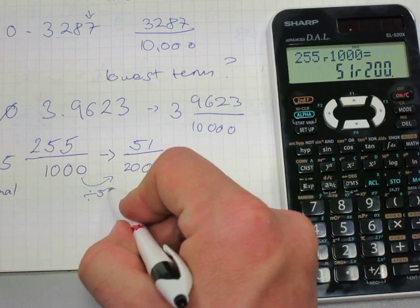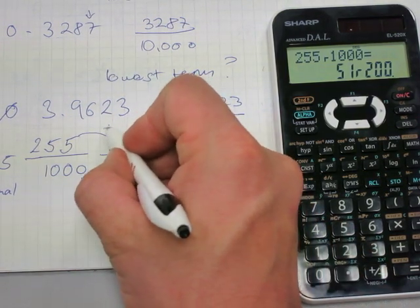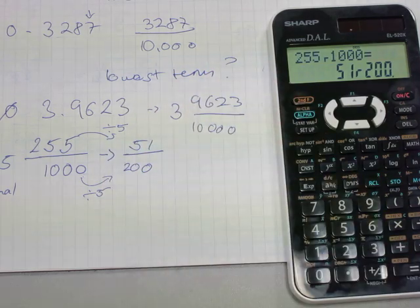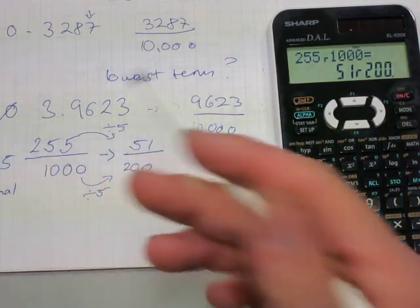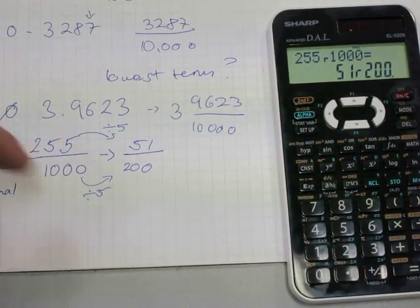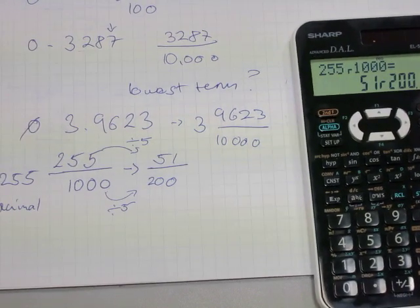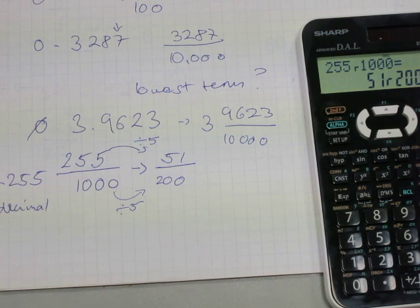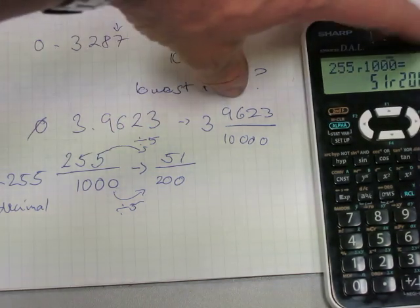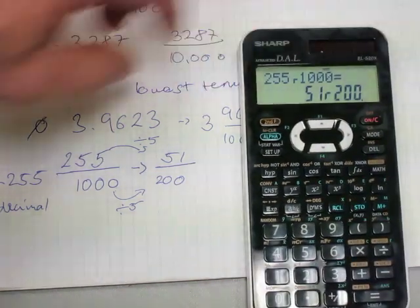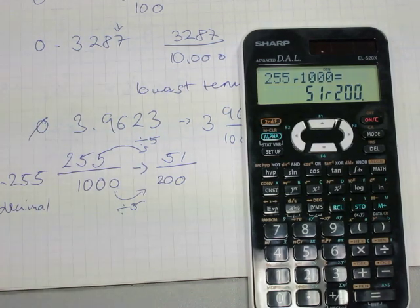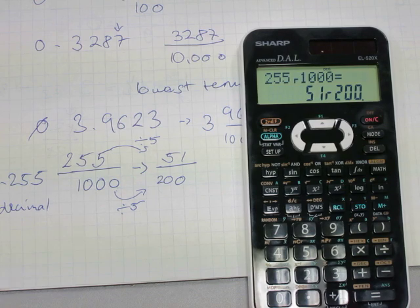So the numerator is also being reduced by a factor of five and five times 51 is 255 and five times 200 is 1,000. So it's fairly straightforward there. Basically this is how to work with decimals, you can make ten-based fractions out of any decimal number fairly easily and then sometimes you have to reduce it to its lowest term and you can do it on calculator like I demonstrated.